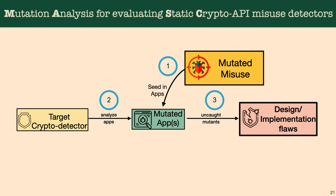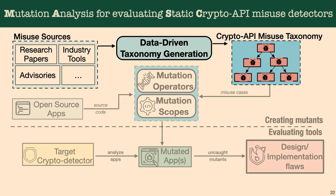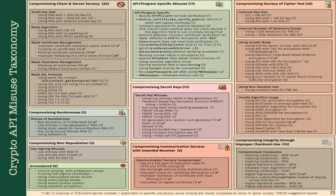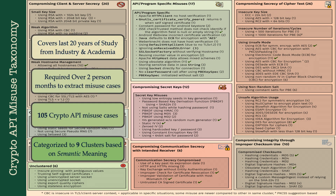Based on that, we can detect design or implementation flaws. But that requires answering two questions: what are the misuses, and how do we actually mutate those misuse cases? To answer that, we performed a systematic data-driven taxonomy generation approach. We went through academic and other sources of misuse from the last 20 years. We invested two person-months to extract all these misuses from different sources, cataloged them, and found 105 crypto API misuses.